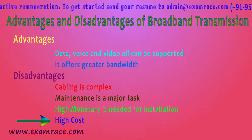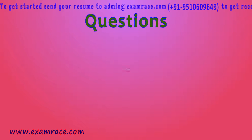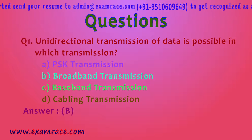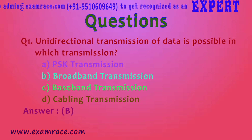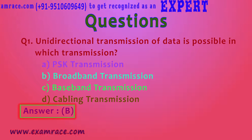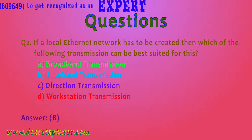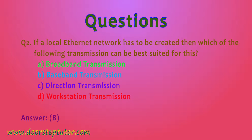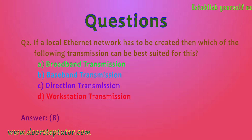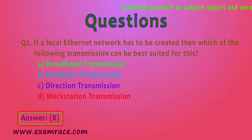Now for some MCQs. The first question: unidirectional transmission of data is possible in which transmission? Options: PSK transmission, broadband transmission, baseband transmission, or cabling transmission. The answer is broadband transmission. The second question: if a local Ethernet network has to be created, which transmission is best suited? Options: broadband, baseband, or others. The correct answer is option two — baseband transmission is used in local Ethernet networks.